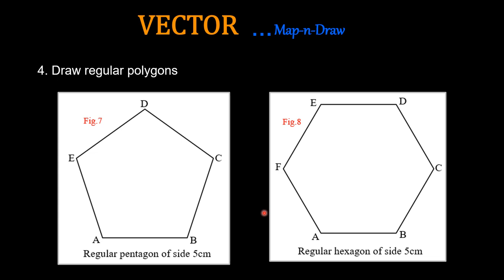Fourth job, again we will draw polygons. Figure 7 will be a regular pentagon of side 5 cm. We have shown in the demo how to plot this using simply vector. Don't use any other instruments and complete this job. Similarly, you can plot hexagon also, and again I have not shown here, but you can plot octagon also, the regular octagon. Complete this job and then continue the video.